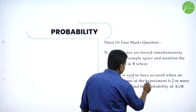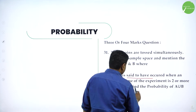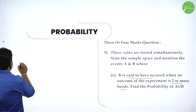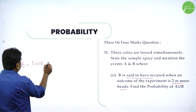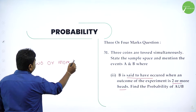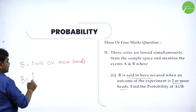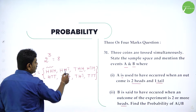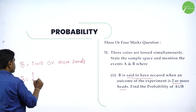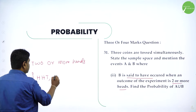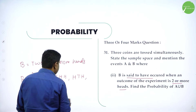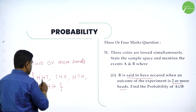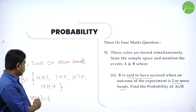Event B is said to have occurred when an outcome of the experiment is 2 or more heads. Event B is 2 or more heads. That means all 3 may be heads, or any 2 may be heads. So 2 or more heads: HHT, THH, HTH, and HHH — 2 or more heads. N of B, number of elements in B, is 1, 2, 3, 4. We got 4 elements.